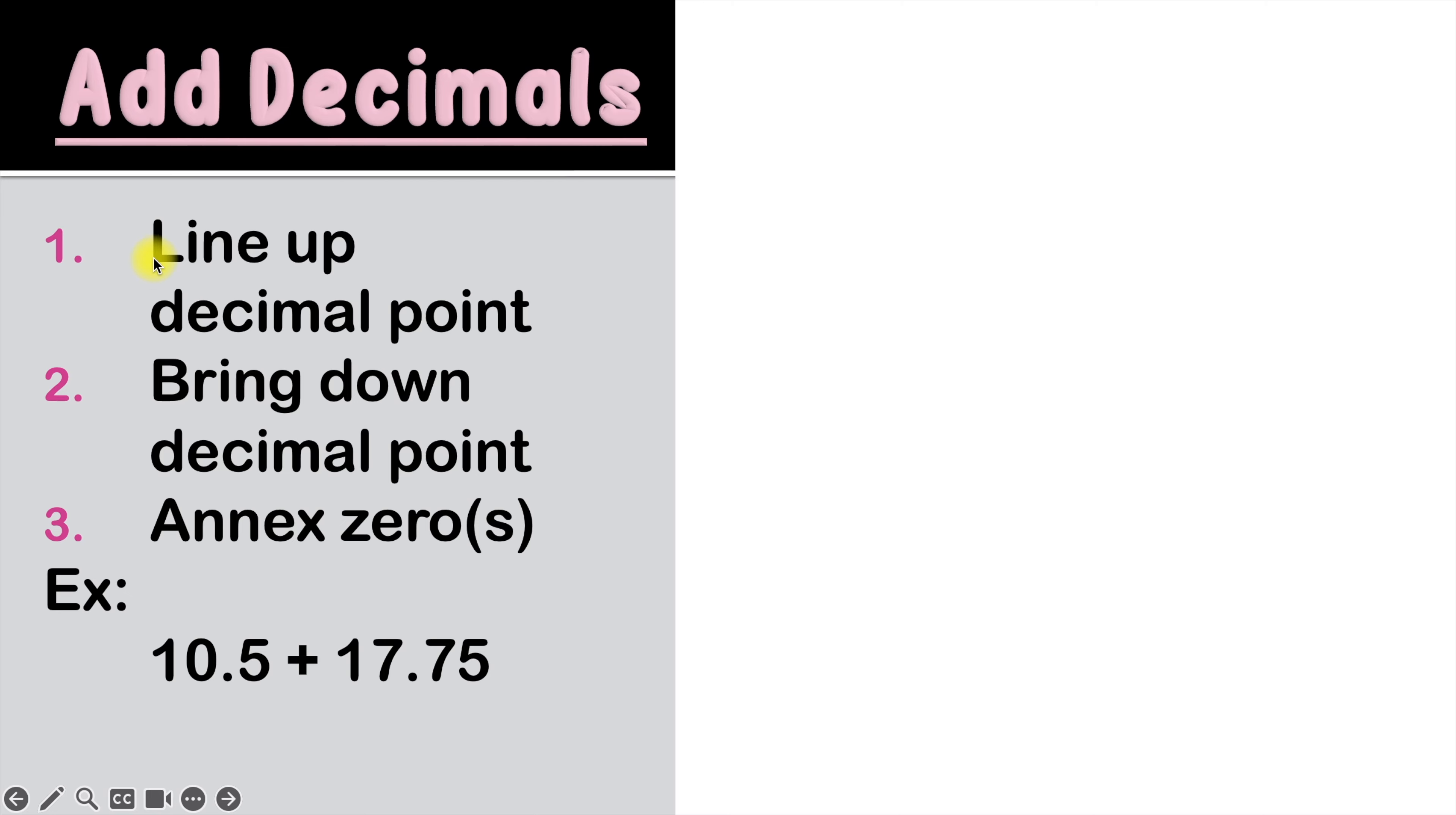So step number one says to line up the decimal point. And the reason why that's important is because when you line up the decimal point, what's really happening is you're lining up your place values. So let's start by writing 10.5, also read as 10 and 5 tenths right here. Now that we've got 10 and 5 tenths written here, we're going to write 17 and 75 hundredths right under it, but making sure that we line up the decimal point in the process. And that means it's going to look just like this.